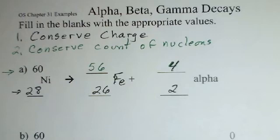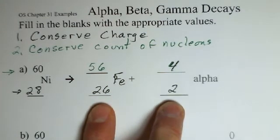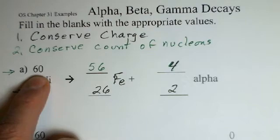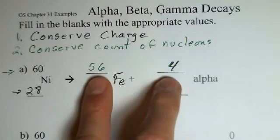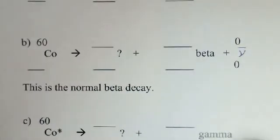The charge that we have on the left, the plus 28, we've got plus 28 on the right. The count of nucleons, 60, we've got 60 nucleons on the right. Another one here, a beta decay, the normal beta decay.